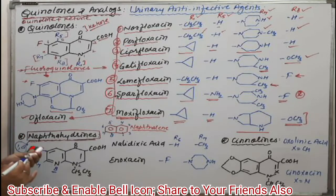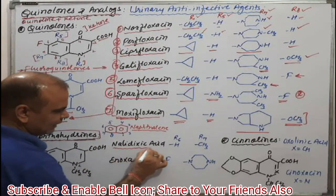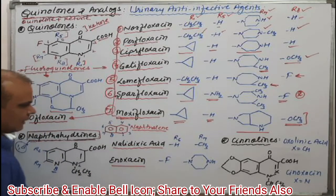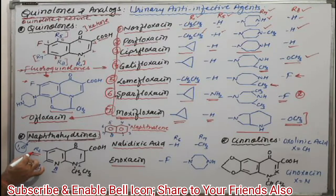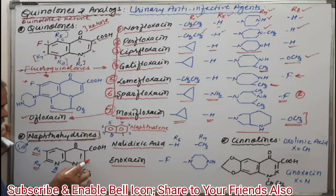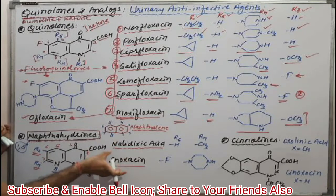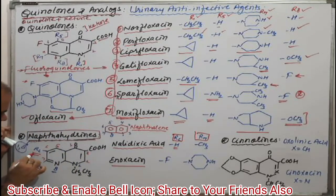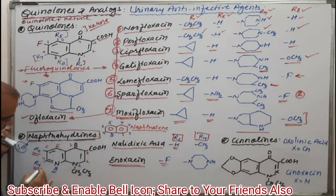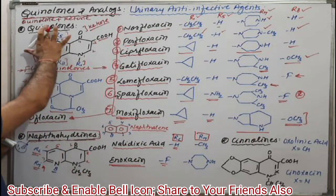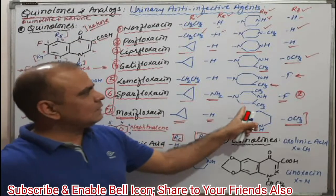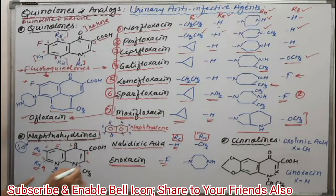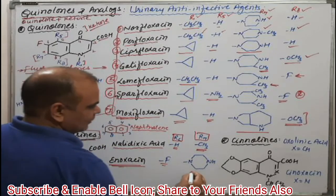There are only two molecules in this category: nalidixic acid, which is used as a urinary antiseptic purely, and enoxacin. There is only one difference: at R6 and R7 positions respectively. For nalidixic acid, R6 is hydrogen, whereas enoxacin has fluorine at the 6th position. For R7, most quinolones or fluoroquinolones have the piperazine ring system — nalidixic acid has a methyl group at R7, while enoxacin has a piperazine ring system.